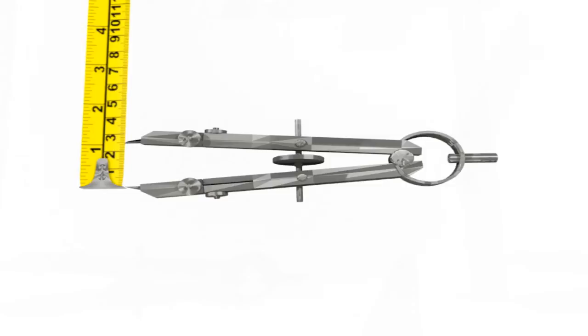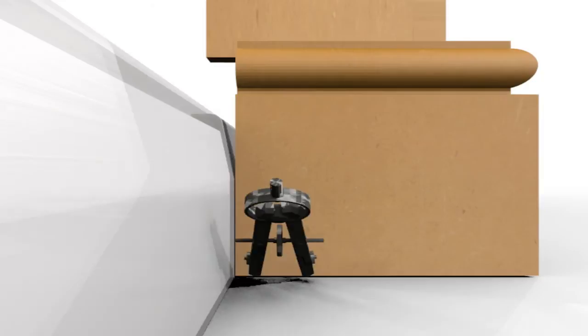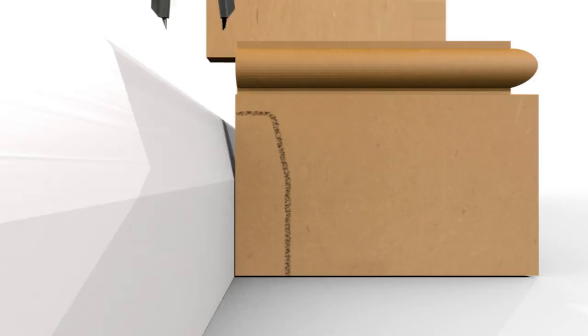First measure how far the sides extend beyond the cabinet when pushed flat. Now set a compass to that distance. When you push the sides flat again, you can mark the side skirting while actually offsetting your room's skirting pattern. All you have to do then is cut along that mark.